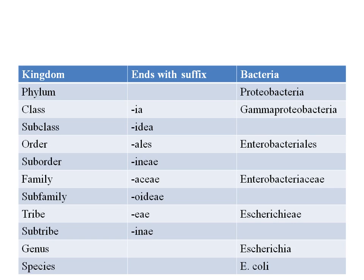Each taxonomic rank ends with a specific suffix. For example, the class ends with the suffix '-ea', as in Gammaproteobacteria. Orders end with '-ales', for example Enterobacteriales. The tribe ends with '-eae', for example Escherichieae. Genus and species do not have a particular suffix, and it changes with different types of bacteria or microorganisms.